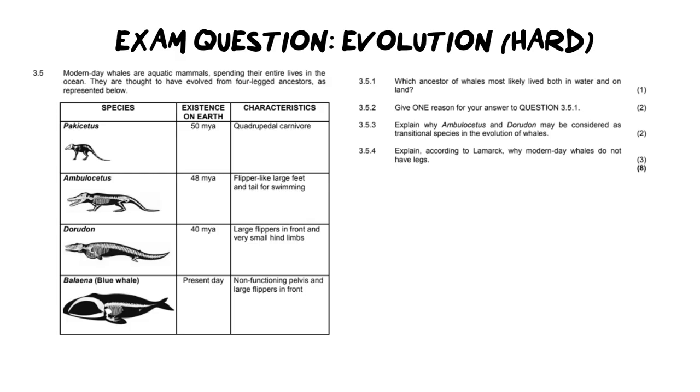This particular question is difficult because it's an application question. It is not a question you would ever have seen before, including the animal they talk about. The questions may seem straightforward, but if you have no knowledge on evolution, modification with descent, what is an intermediate fossil or organism, you're going to struggle. There's also a question on Lamarckism, so if you can't apply Lamarckism to this situation it makes it even more challenging. This is definitely an advanced question.